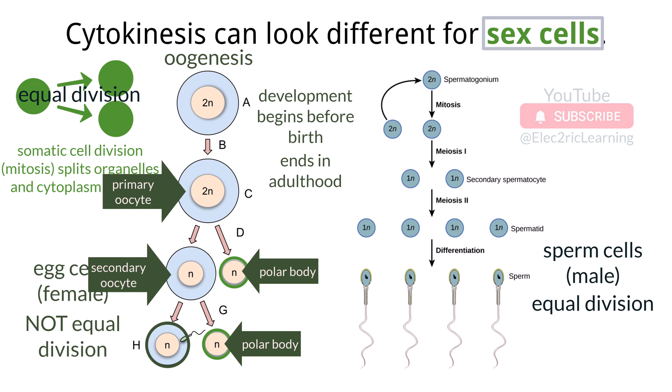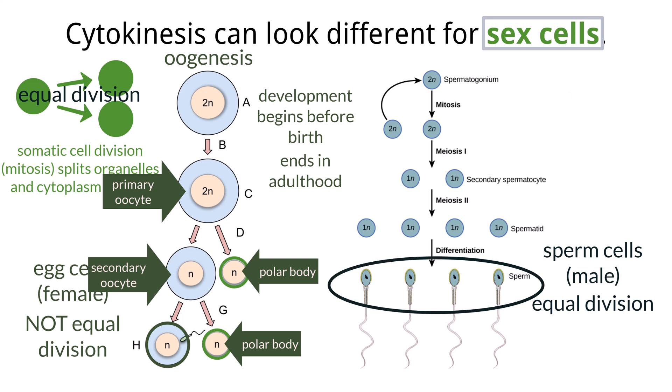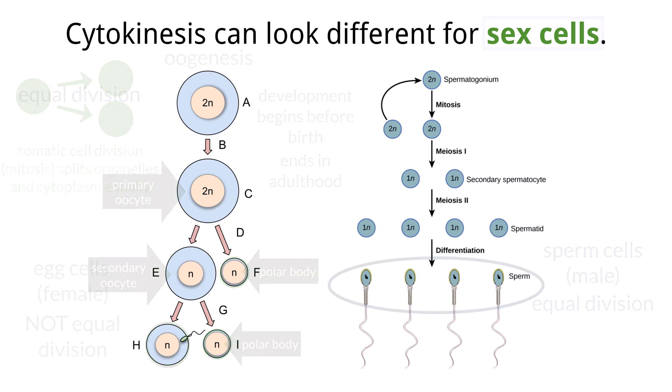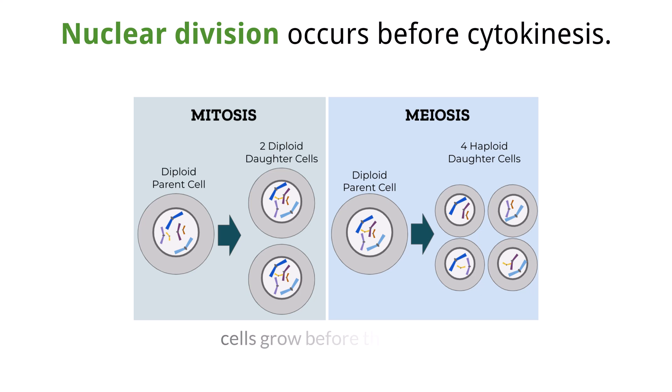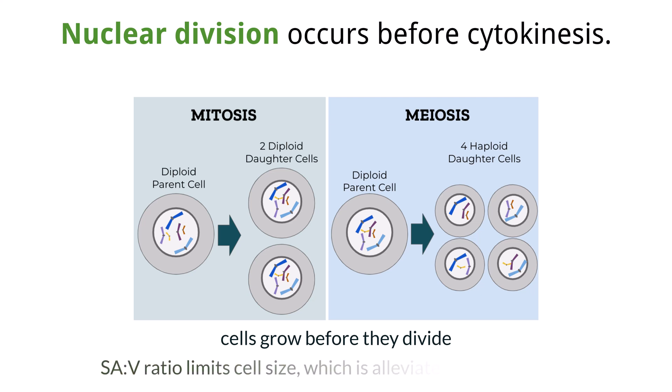The sperm contributes genetic material only — it does not provide cytoplasm or organelles in the fertilization process. Thus, the egg must have everything the growing embryo requires. Before cells divide, they grow. Cells cannot continue to keep growing because there is a point where the surface area to volume ratio is inadequate to allow transfer of materials into the cell and removal of waste materials and products out of the cell. This is when the cell will divide.